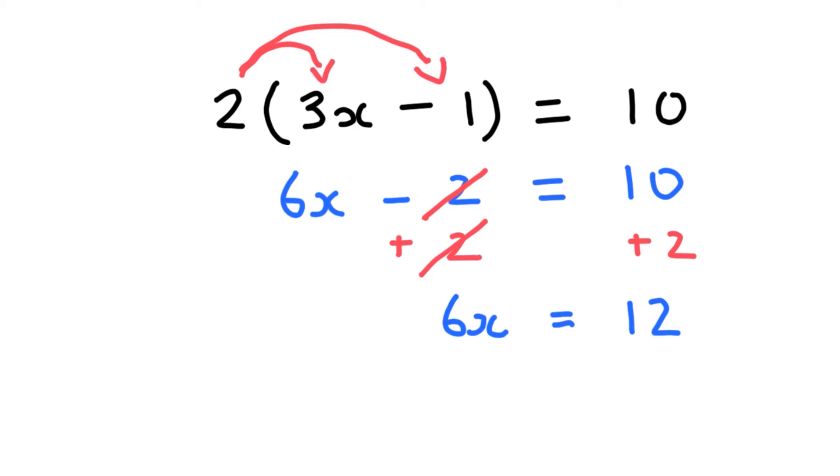Now, I still need to get x by itself. I have 6 times x. So I have to do the opposite, and I'm going to divide out this 6. What I do to one side, I have to do the other. When you have a 6 on top, 6 on the bottom, they will cancel. So now on the left, I have x is equal to 12 divided by 6 is 2.